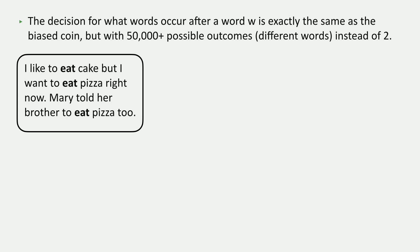So again, let's think about the probability of the next word given that the previous word was to. Now, in order to figure this out, we actually only want to look at words that follow the word to. So here's our, in this box, I've put some data for us to learn probabilities from. I like to eat cake, but I want to eat pizza right now. Mary told her brother to eat pizza too.